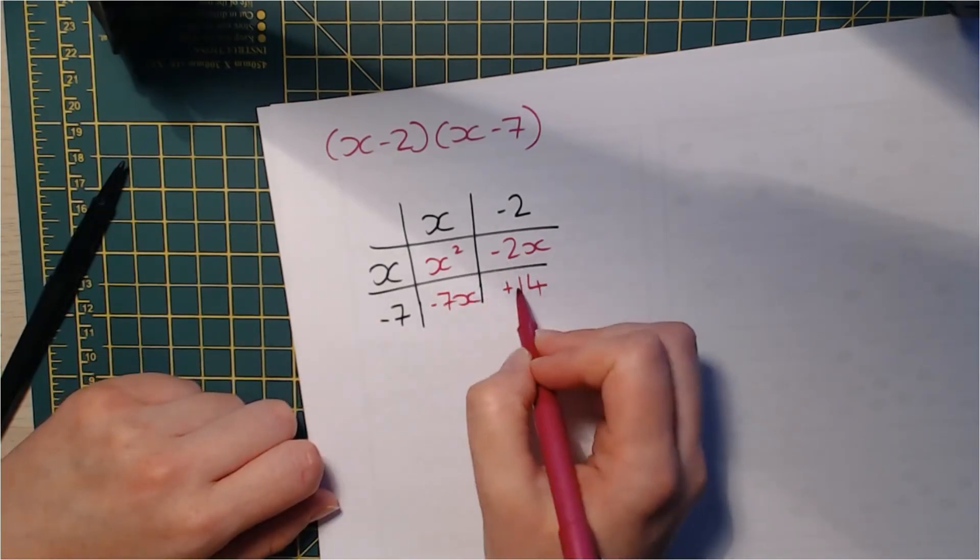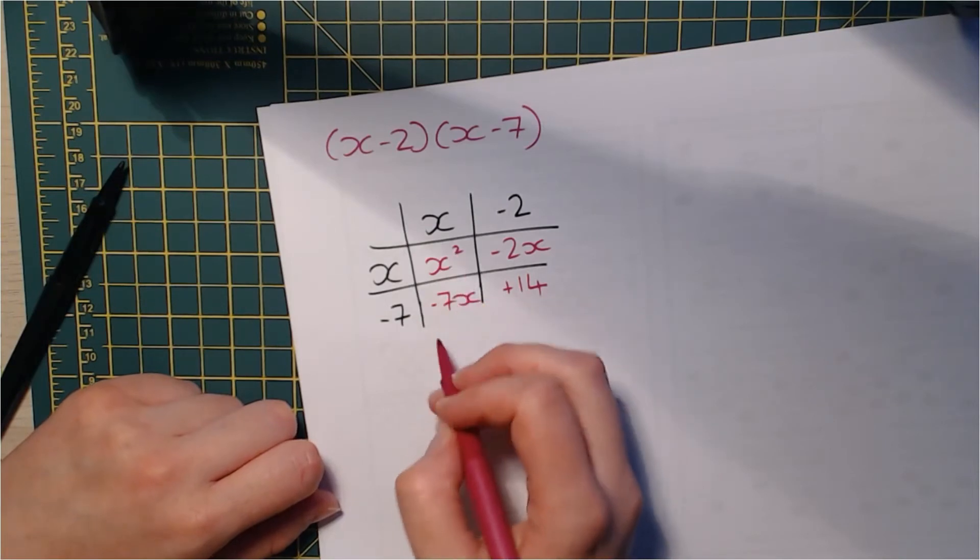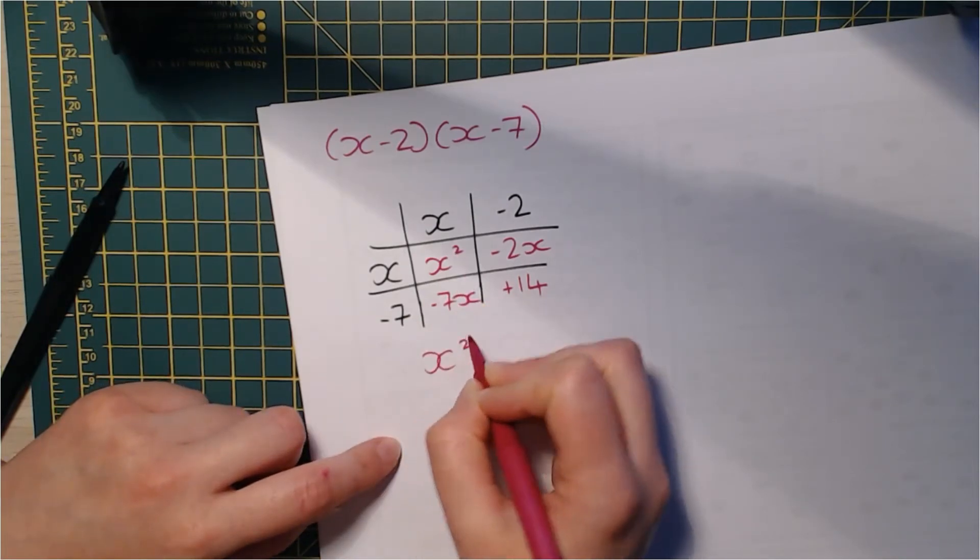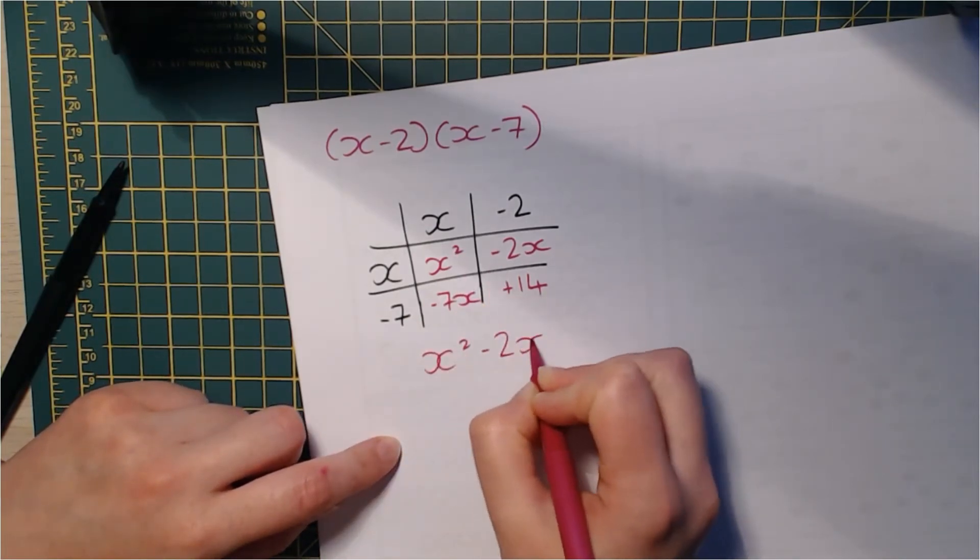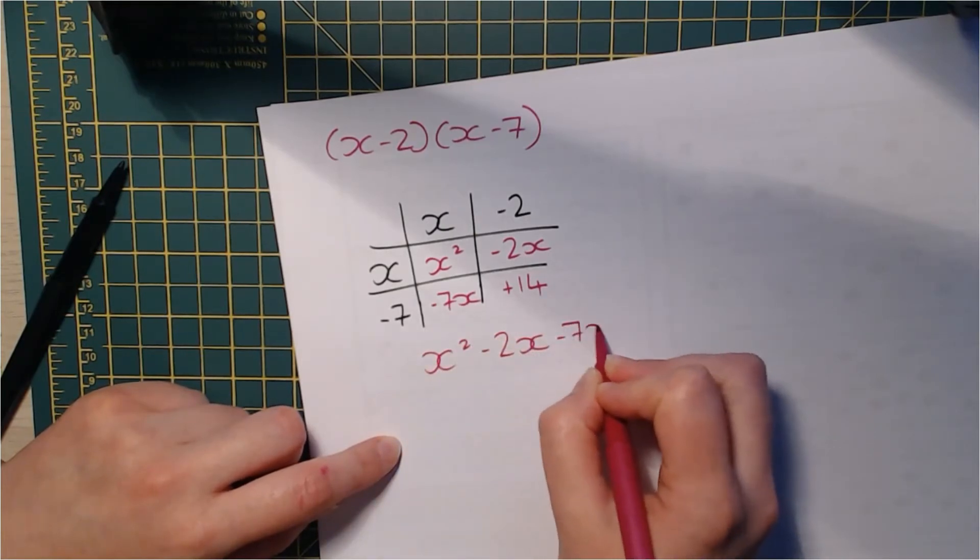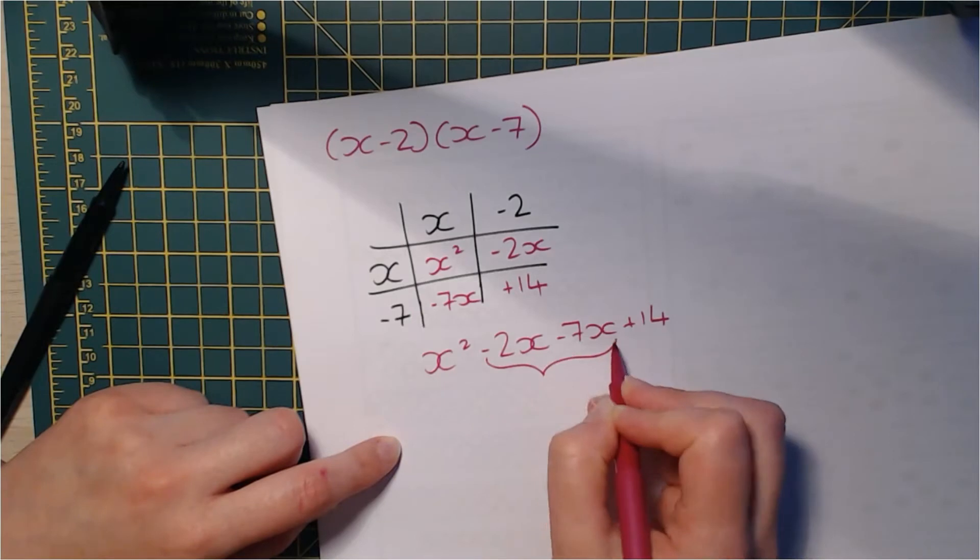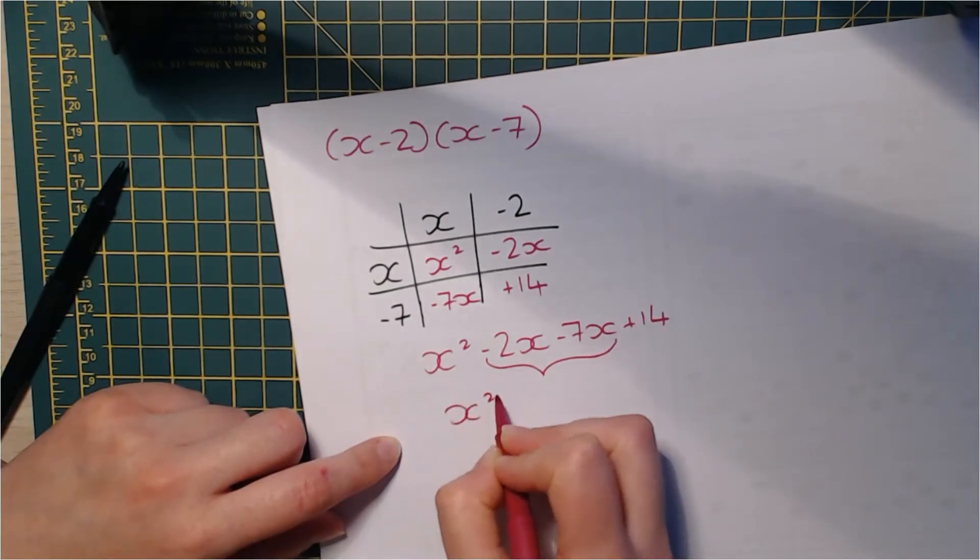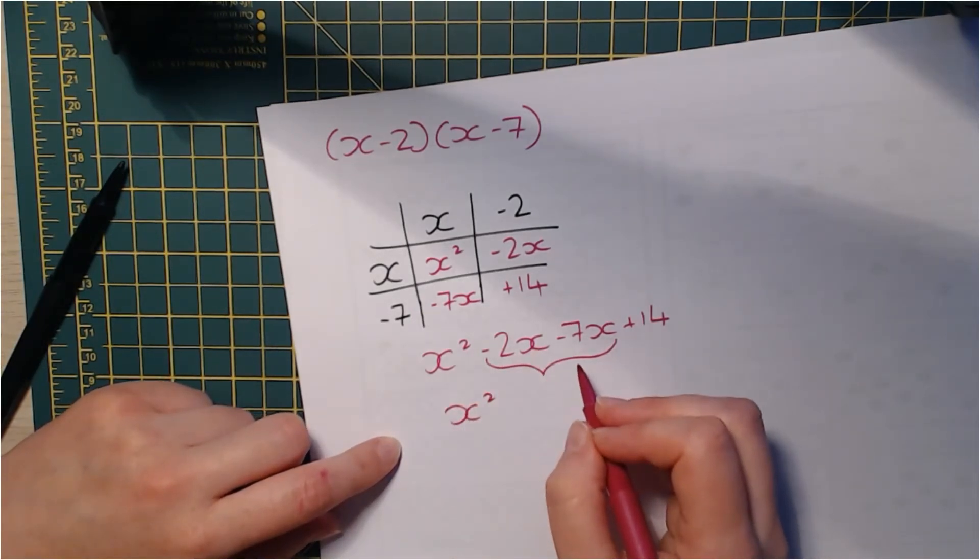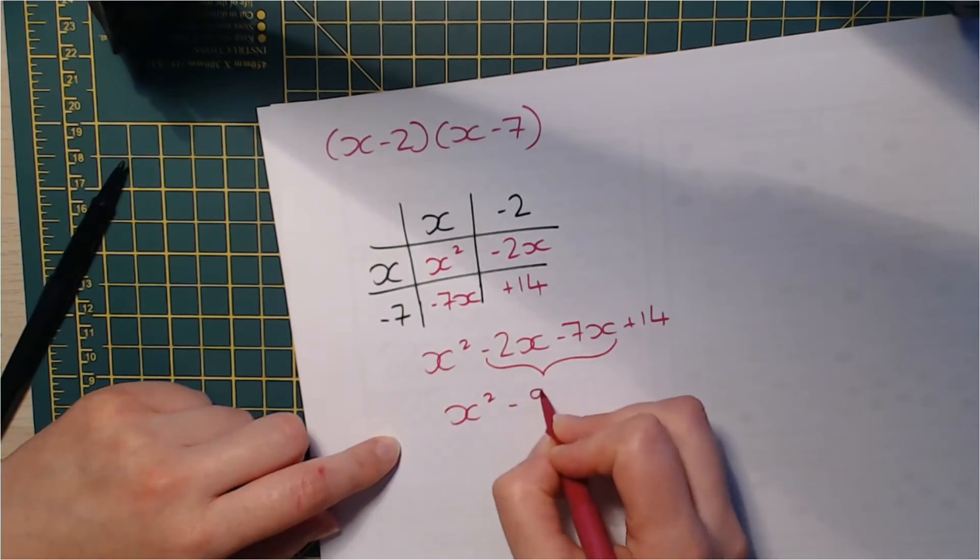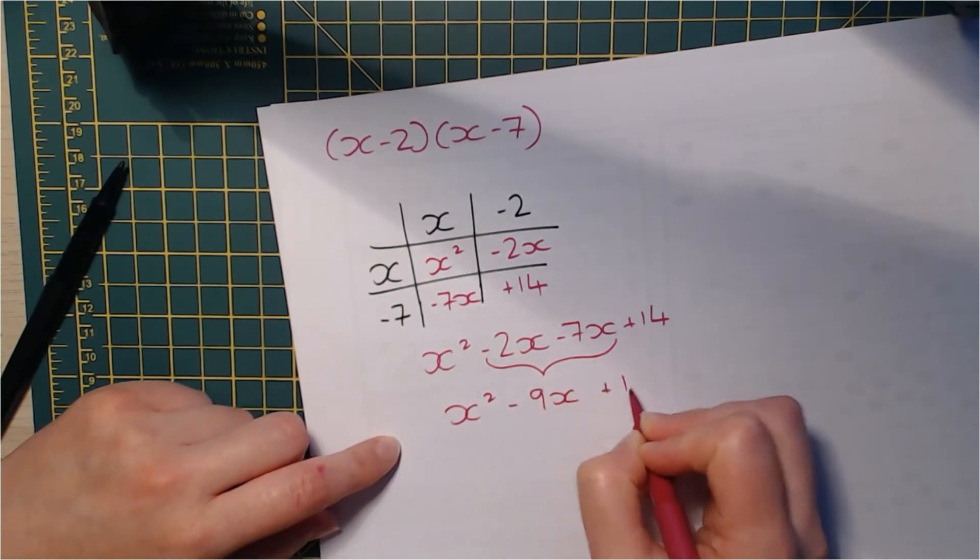So I'm going to work across this way. My highest power here of x is x squared, negative 2x, negative 7x, positive 14. I can just simplify here. Negative 2x subtract 7x, negative 9x plus 14.